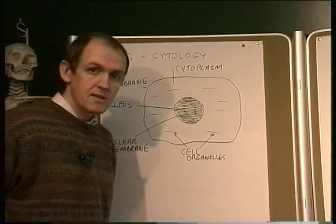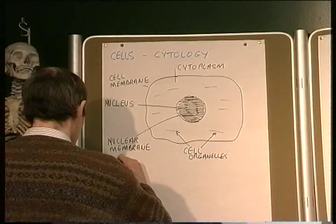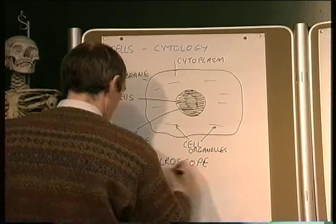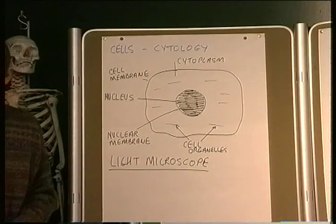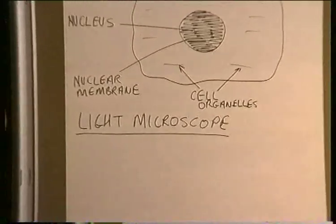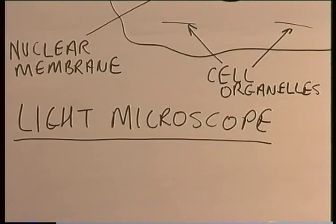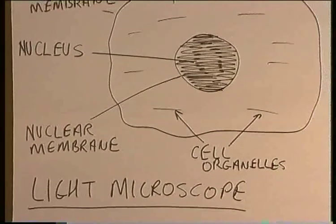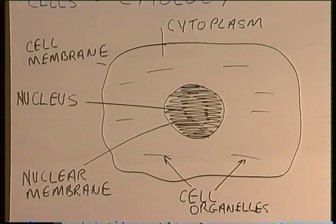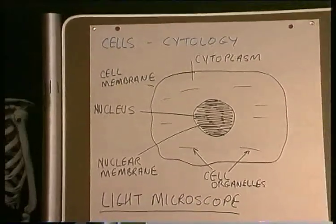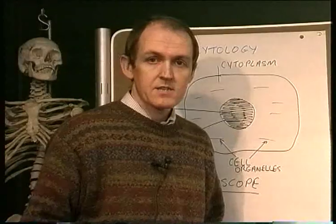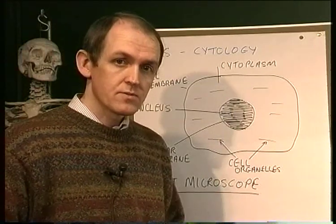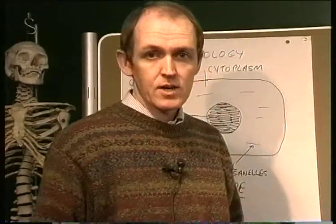So this whole diagram is a generalized cell as seen with a light microscope. Later on we'll look down a light microscope and see some examples of animal cells in different tissues. Now we're going to look at some aspects of cell physiology — what cells do. The first topic is cell reproduction: how do cells reproduce? Because this is absolutely fundamental to human life.